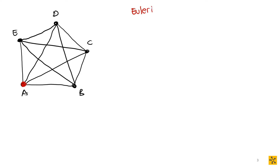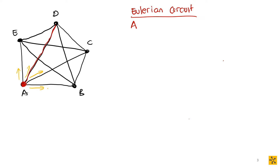We write up the Eulerian circuit as we go, starting at A. Now we look at all the incident edges: A to C, A to D, A to E, and A to B. None of those are bridges — they're all part of cycles — so we can choose any of them. We choose A to D and highlight it; that edge is now removed from the graph.